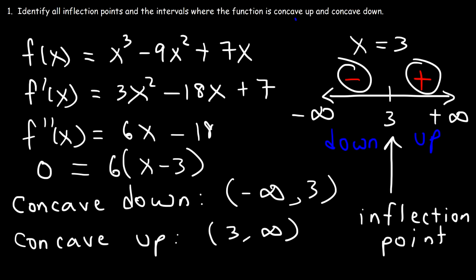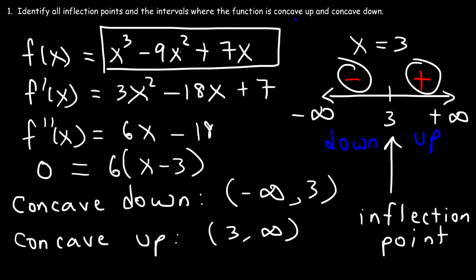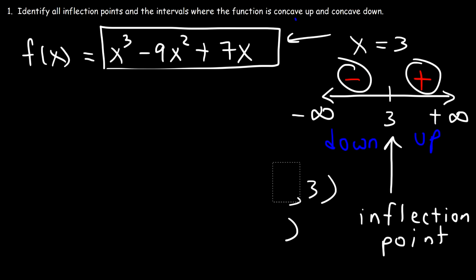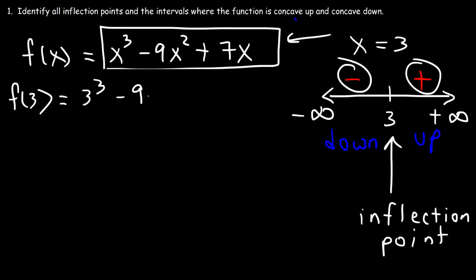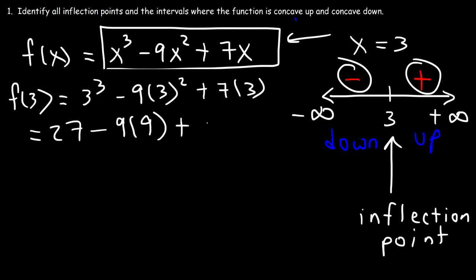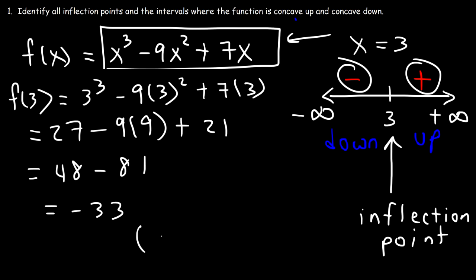Sometimes you may need to find the y-coordinate. If so, plug x = 3 into the original function. f(3) = 3³ − 9(3²) + 7(3) = 27 − 81 + 21 = −33. So the inflection point exists at (3, −33) for this problem.